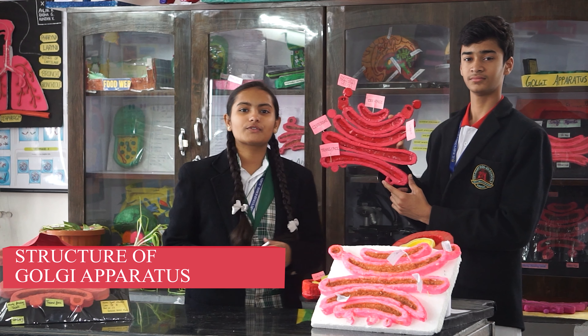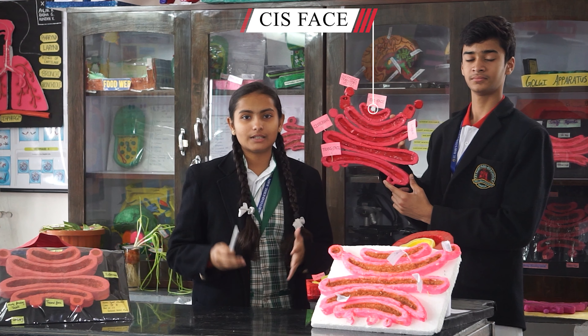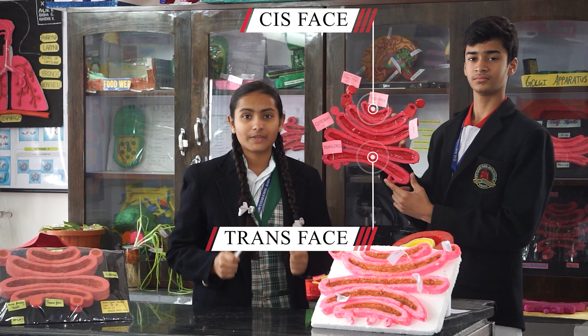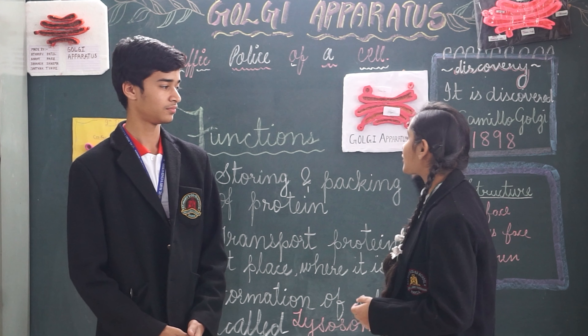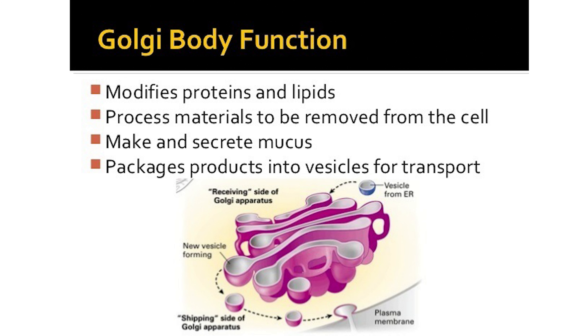Now let us discuss the structure of Golgi apparatus with the help of some models. This is the model of Golgi body, created using paper. Golgi body is an organelle with a single-layer membrane and is present as a parallel series of cisternae. It has two phases: the cis phase, where it receives proteins from the endoplasmic reticulum, and the trans phase, where it releases the protein. There is also a fluid inside the cisternae called the lumen.